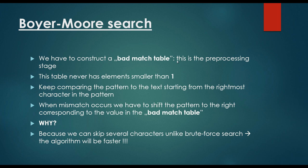First we have to construct a badmatch table with the help of the pattern. This is the preprocessing stage, and this table never has elements smaller than one. We keep comparing the pattern to the text starting from the rightmost character in the pattern, and when a mismatch occurs we shift the pattern to the right corresponding to the value in the badmatch table. This allows us to skip several characters unlike brute force search, and eventually the algorithm will be faster.